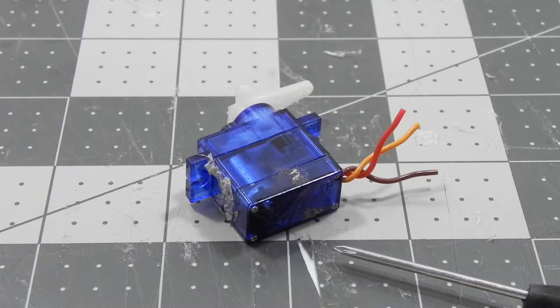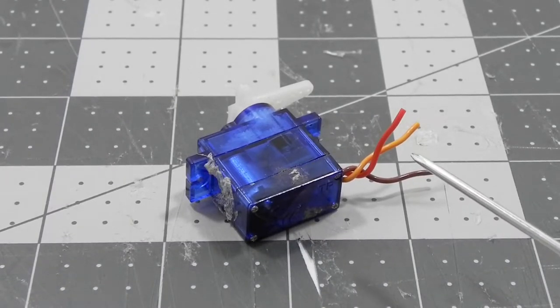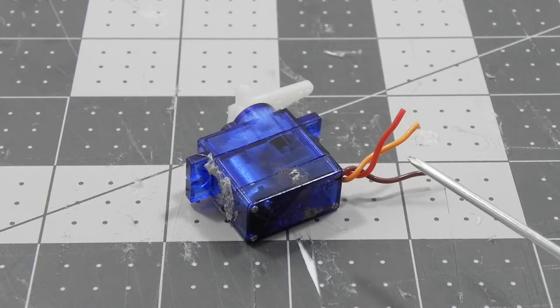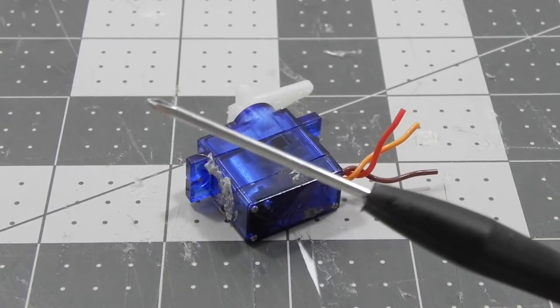Here's how to take apart a servo. If your servo is the same as mine and has small Phillips screws on the bottom, it probably takes a 564 Phillips screwdriver, which looks like this. Let's get started.